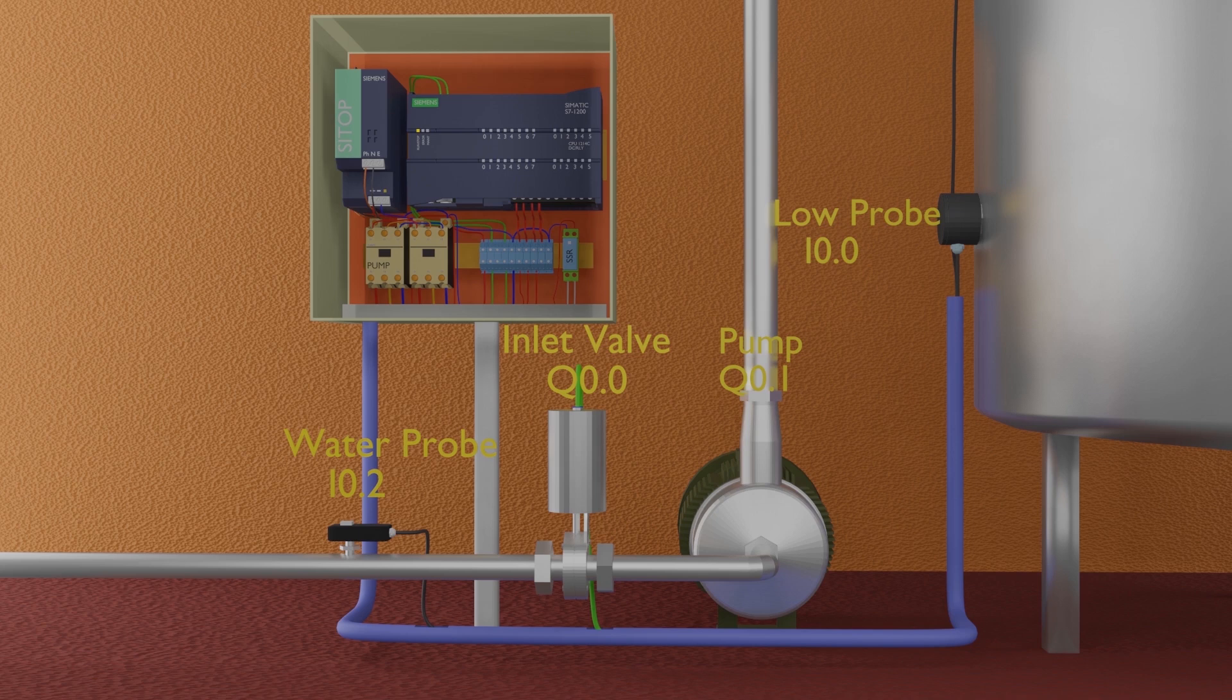Next, we have installed an inlet valve at PLC output Q0.0. Next, we have installed a pump to pump the water in the tank, it is connected at Q0.1.